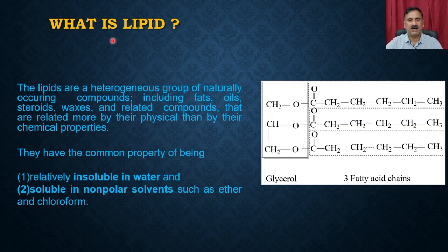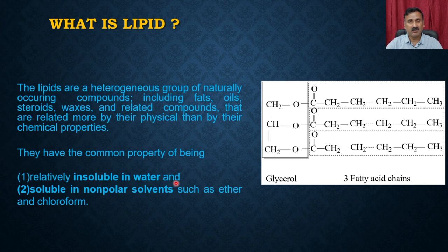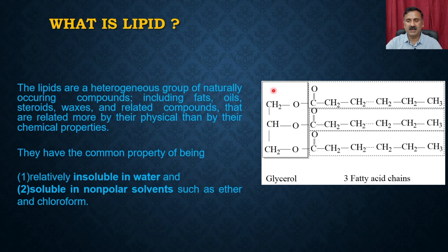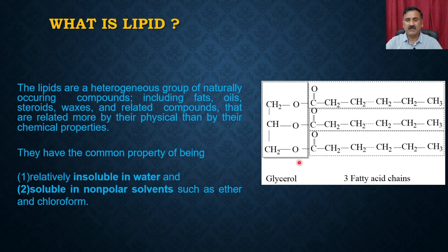Subsequently we discussed lipids. Lipids are a heterogeneous group of naturally occurring compounds including fats. They have the common property of being relatively insoluble in water while being soluble in non-polar solvents such as ether and chloroform. Lipid is made up of two different groups: a backbone made of glycerol, and fatty acids — it can have three fatty acid chains — and that is the basic structure of lipids.